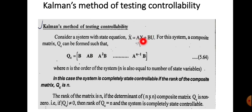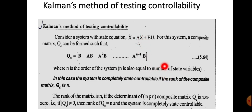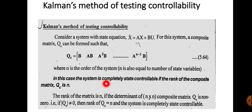This is the composite matrix Qc, where n is the order of the system determined by the number of state variables. The system is completely state controllable if the rank of the composite matrix Qc equals n. We need to know how to calculate the rank of a matrix.